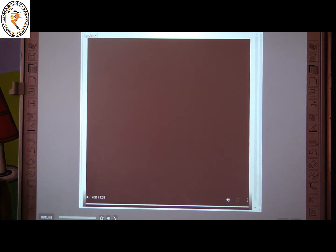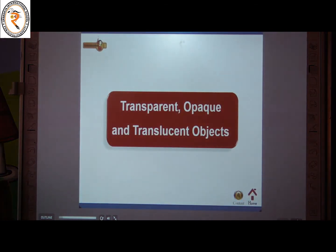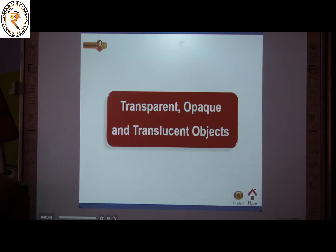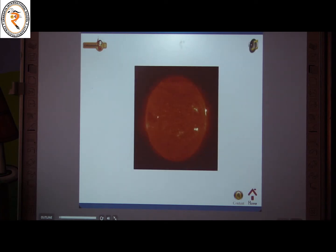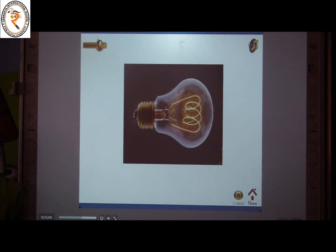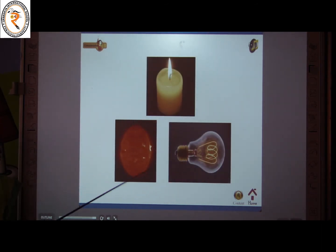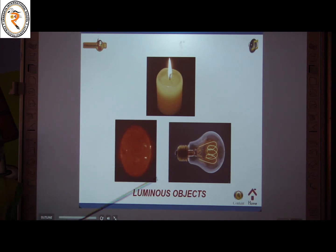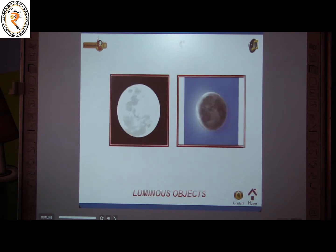Next, we will discuss about transparent, opaque, and translucent objects. The sun, candle, and tube light — that is a bulb — these are all called luminous objects. We already know that luminous objects emit light by their own. The examples of luminous objects are candle, sun, and bulb.